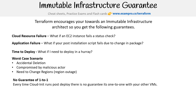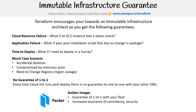By introducing golden images — an immutable infrastructure idea — you get a guarantee of one-to-one with your fleet. You have increased assurance of consistency and security, and you can speed up your deployments. The security improvement comes because you can perform security checks on that image before you roll it out. I would recommend going with immutable infrastructure and baking images when you can, if you're using VMs.